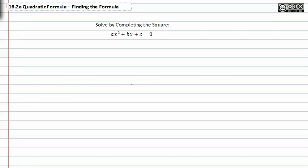First, we have to get the c or the number term on the right side of the equal sign. And remember, I leave a space on the left side of my equation for when I complete the square.